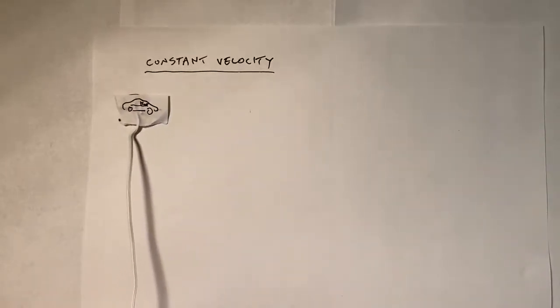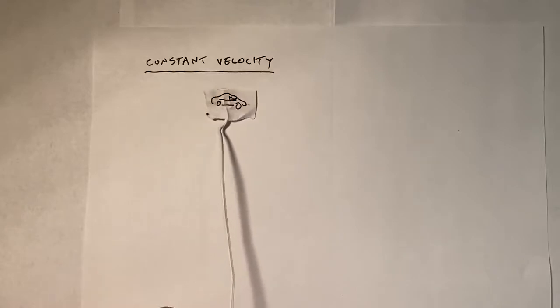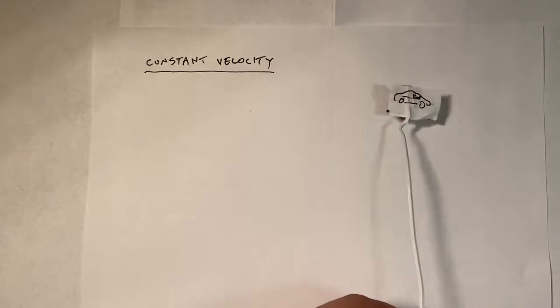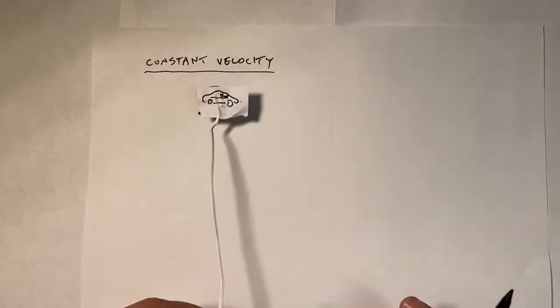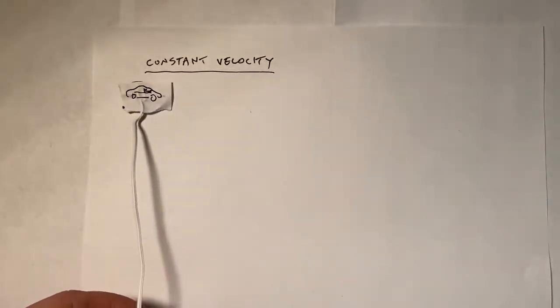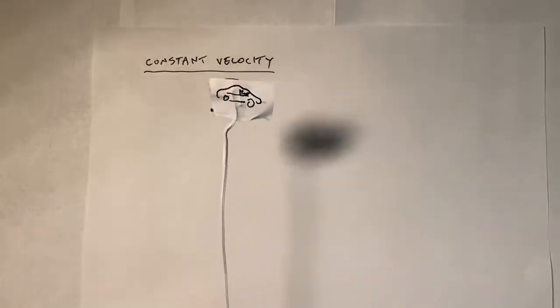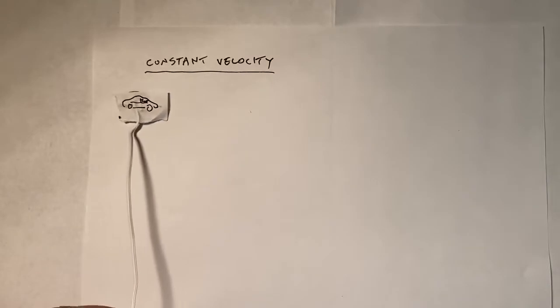So one of the things we do in physics is to try to make models. We want to make a model that describes this thing, so then we can use that model. That model could be an actual model. This is a model of an actual car, look. See, I drew it. Look at that. But maybe a more useful model would be to build a mathematical model.